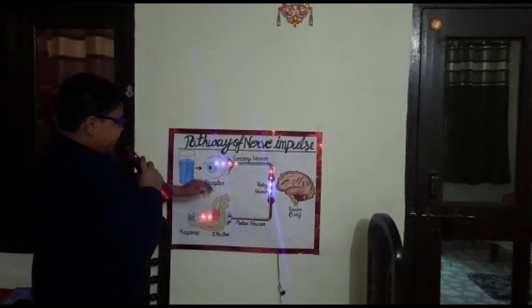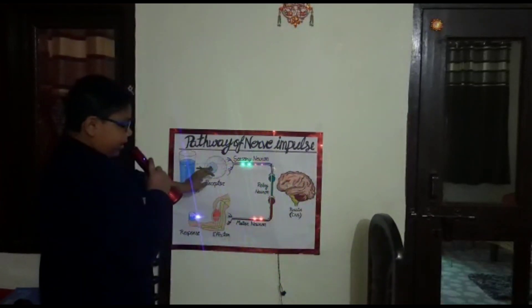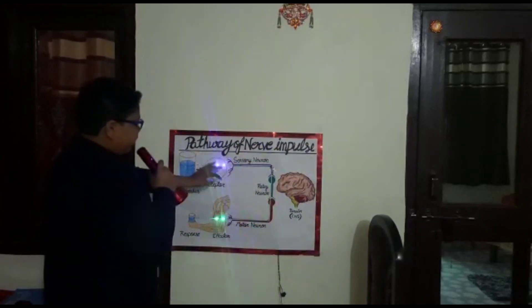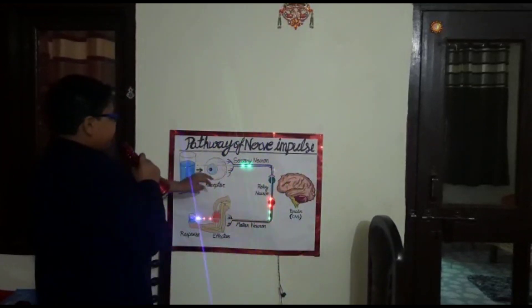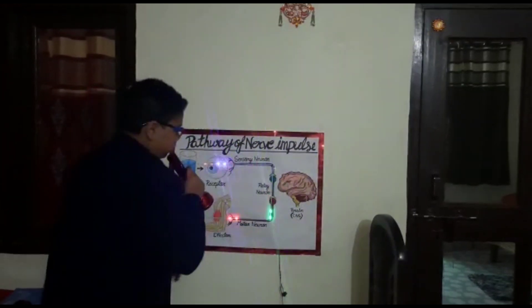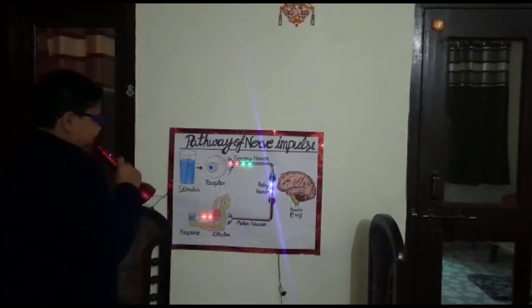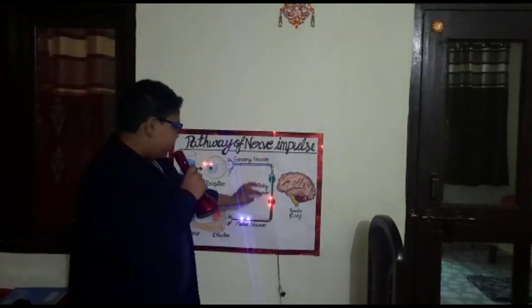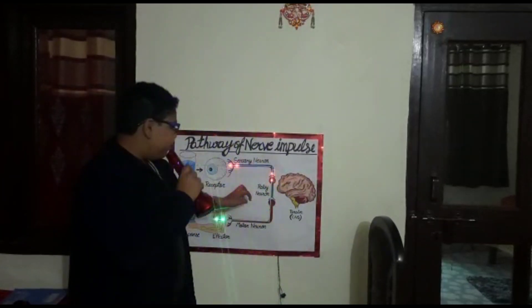This receptor, or the eye, converts them into nerve impulses and gives them to the sensory neuron. This sensory neuron then takes them to the relay neuron.